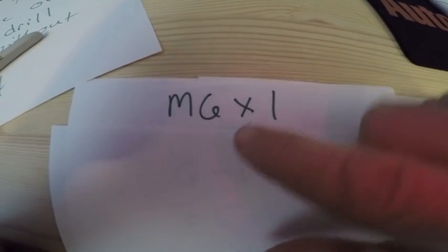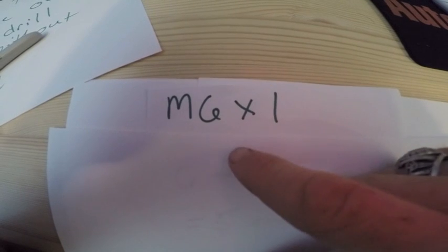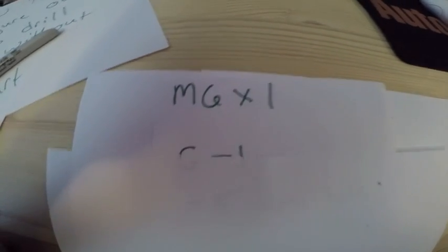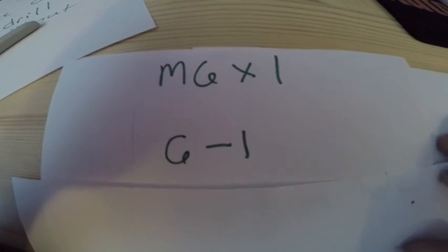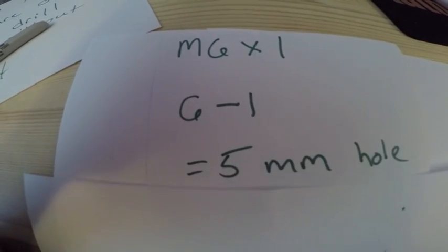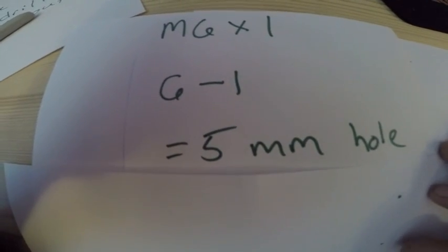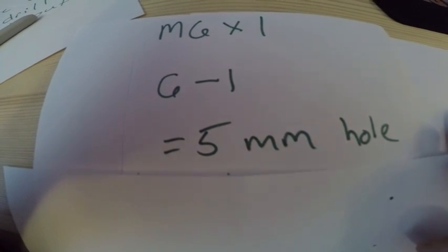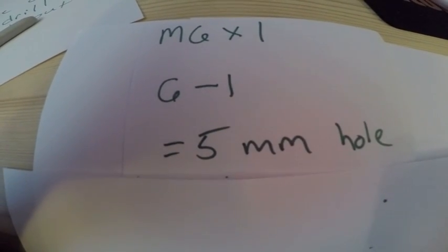So all you're going to do is you're going to take your M6 by 1, you're going to take your 6mm, subtract the pitch, which is your 1mm, and that's going to leave you with a 5mm hole. You drill your hole 5mm, run that tap through it, you're going to have good threads.